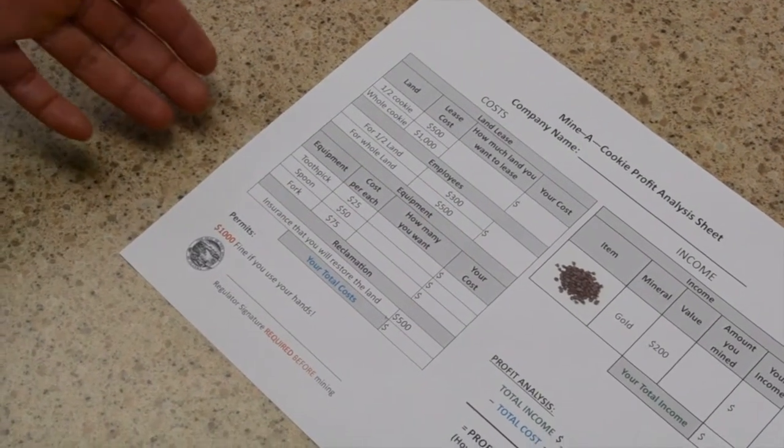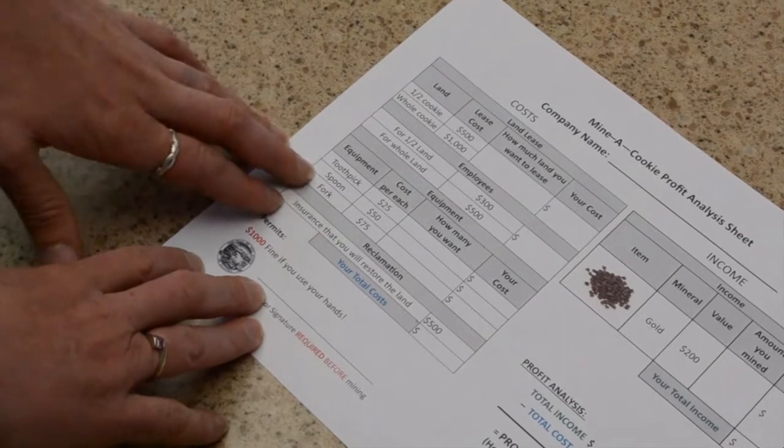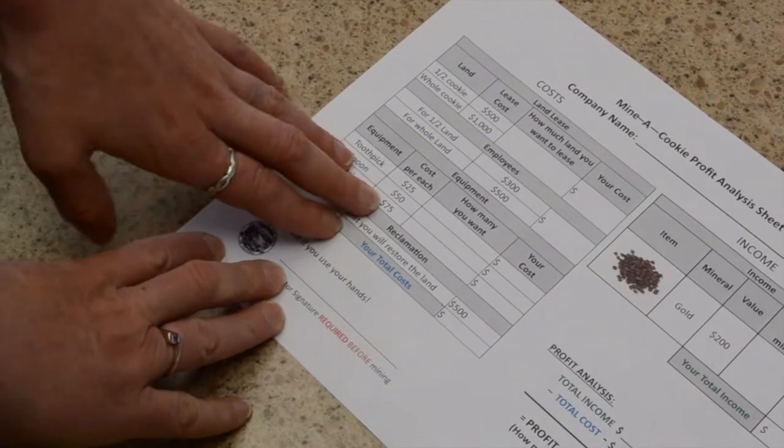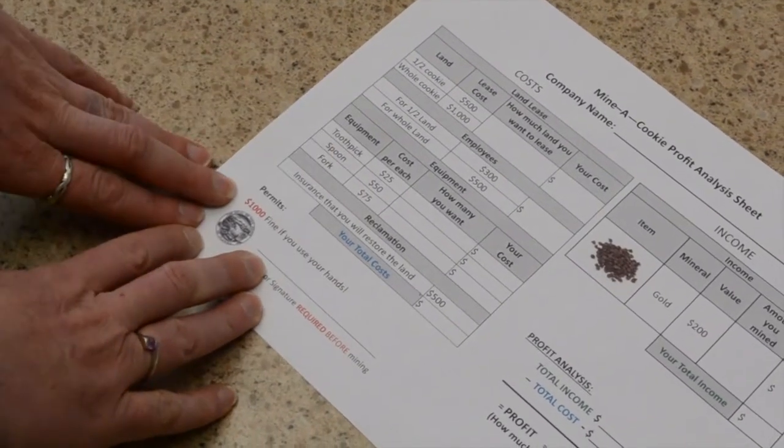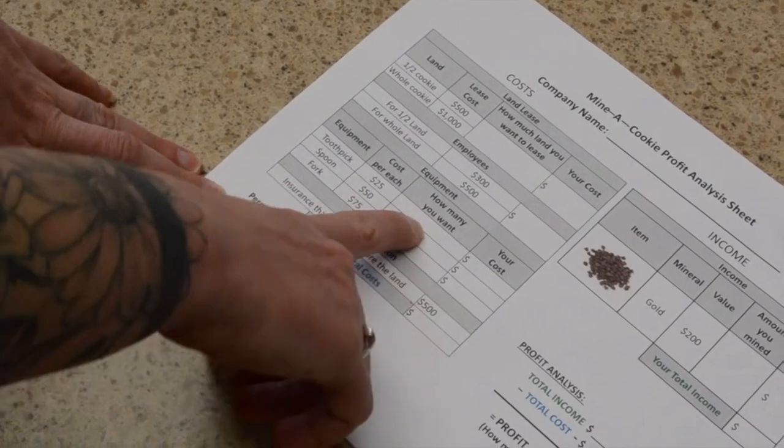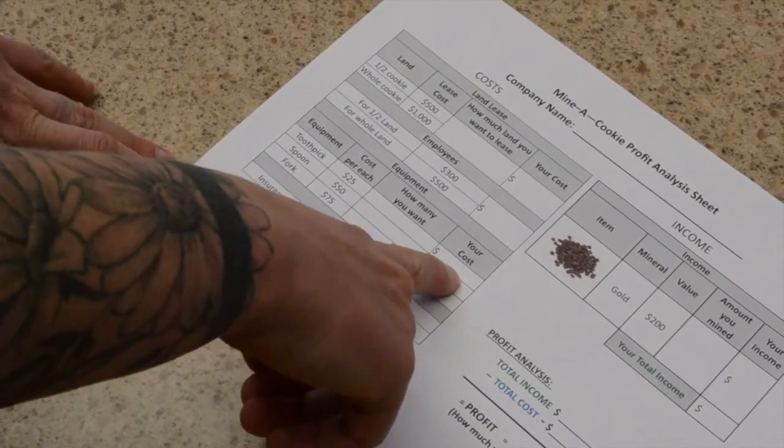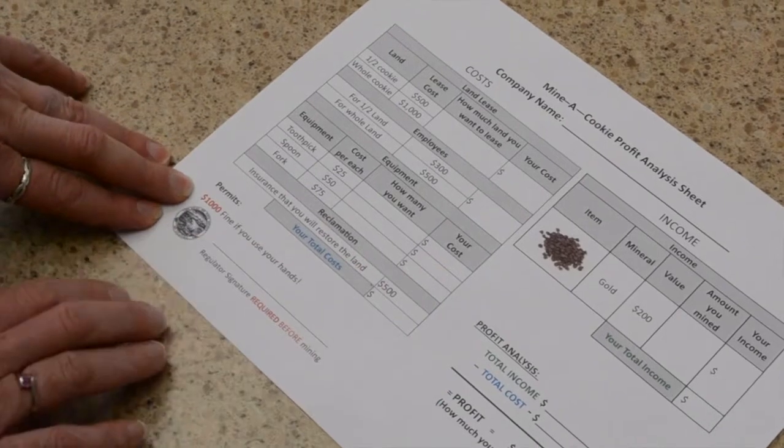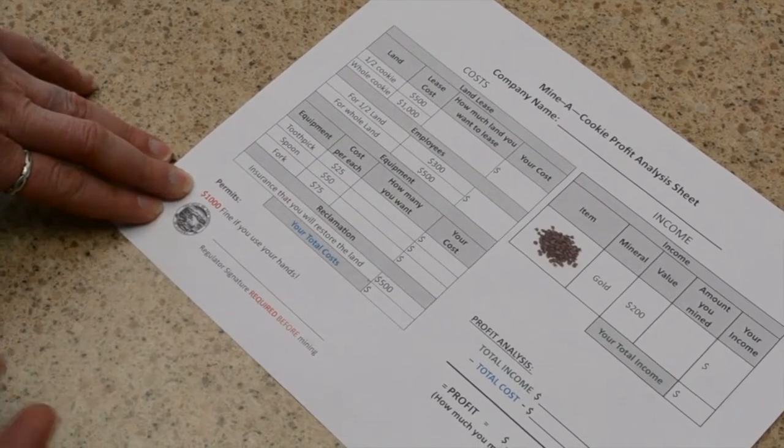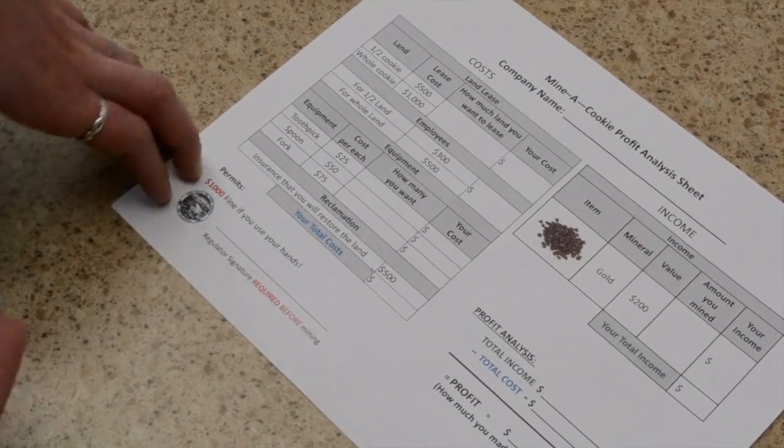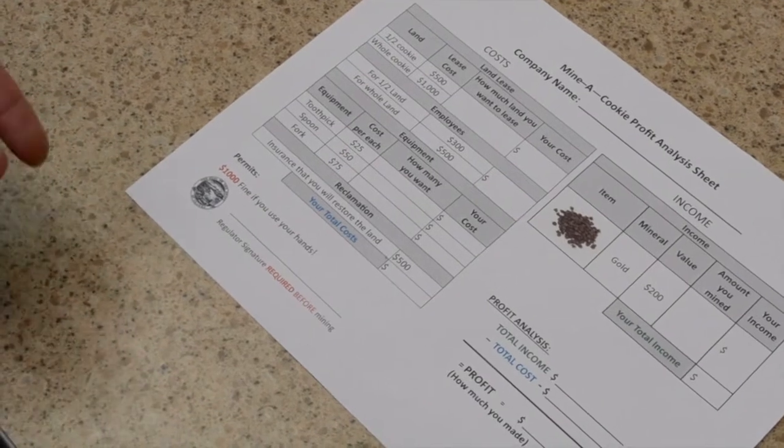Then they need equipment. So their equipment options are toothpick, spoons, and forks. These are their costs per item. So they'll have to do a little bit of math here to figure out if they wanted two toothpicks, it would cost them $50. So they'll figure all that out, decide how much they want. We always let them buy more later. Sometimes they'll just buy two toothpicks and get in there and realize they need more.